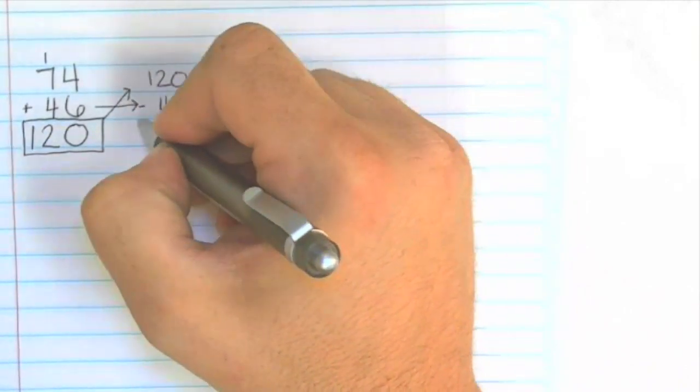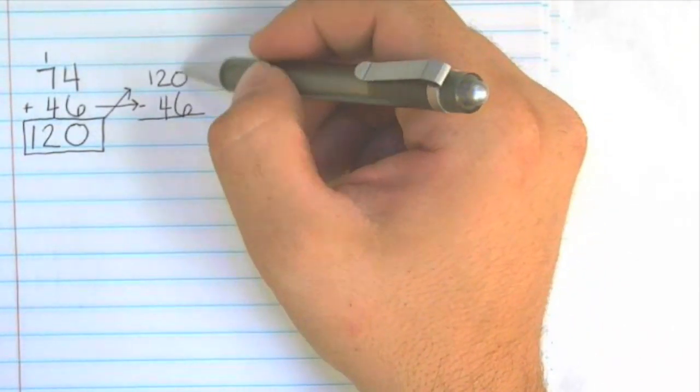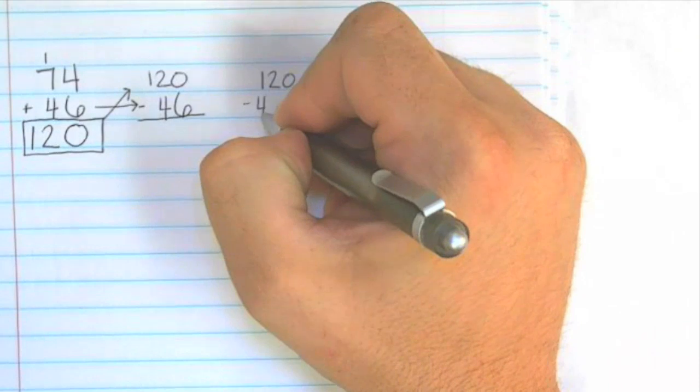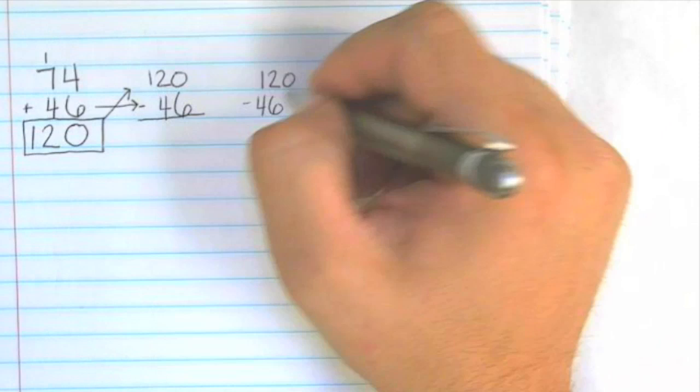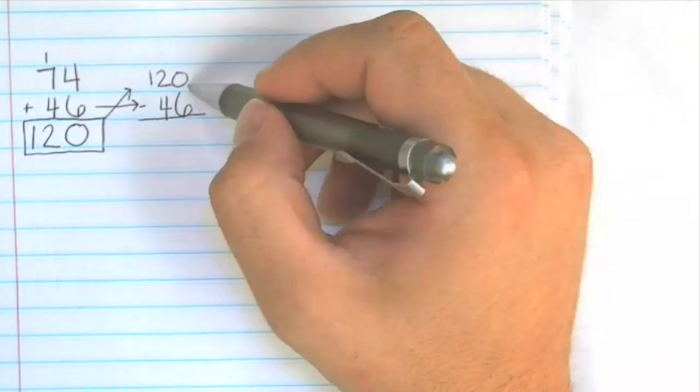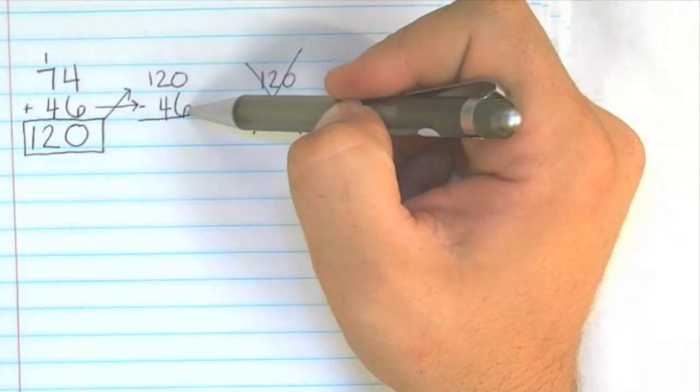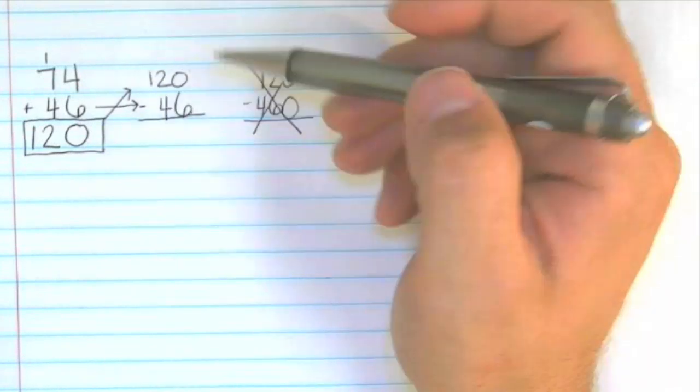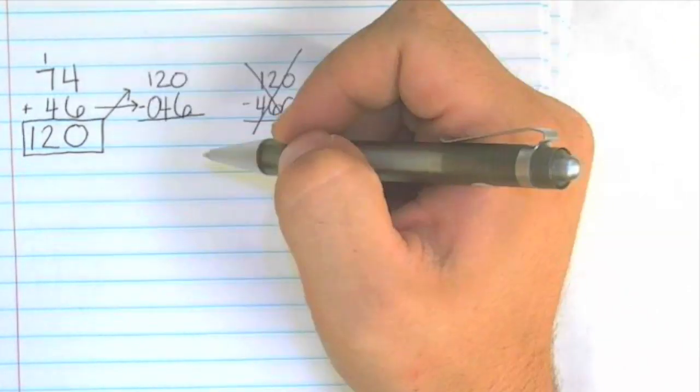Again it's very important as you write these numbers out that you make sure the ones column is lined up, the tens column and the hundreds column, because if you wrote 120 subtract 46 you're going to make, this will not be right because by putting the 46 here you're actually making it 460 and these two problems are very different from each other. So it's very important that you pay attention and line the ones digits up with the ones digits, the tens with the tens, hundreds with the hundreds. If it's helpful for you to put a zero here to let you know that there's zero hundreds, then do that.